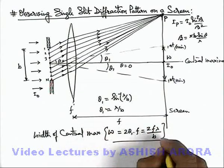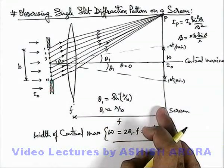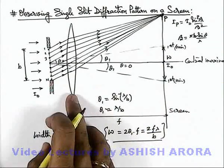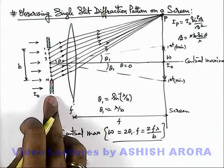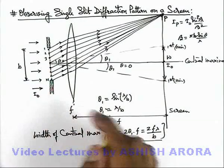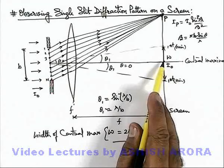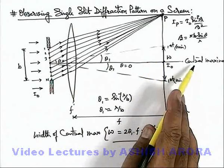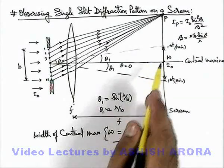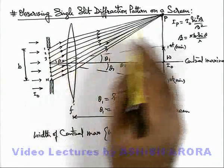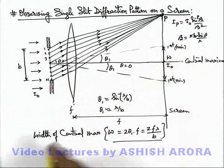This is the width of central maxima on the screen placed at a distance equal to the focal length of lens and lens is considered to be very close to the slit. Now in this situation at theta equal to zero on the screen there will be a bright fringe which is called central maxima. Then there will be dark fringes on the either side of it, and correspondingly at various angles.